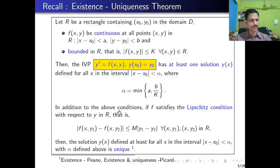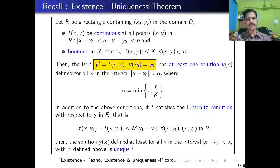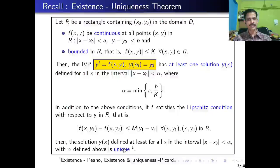In addition to the above condition, if f satisfies the Lipschitz condition with respect to the second variable y in R — that is, |f(x, y₁) - f(x, y₂)| ≤ m·|y₁ - y₂| for all points (x, y₁) and (x, y₂) in the rectangle R — then the solution y(x) defined for all x in |x - x₀| < α is unique.